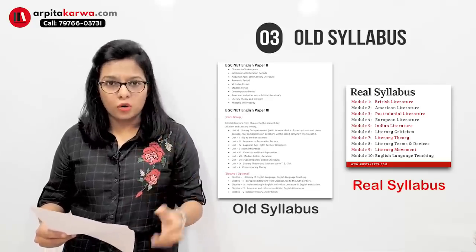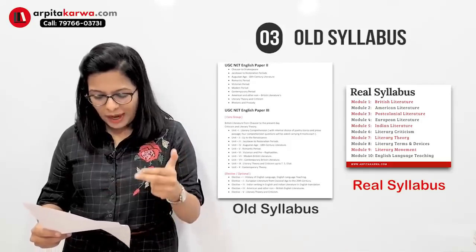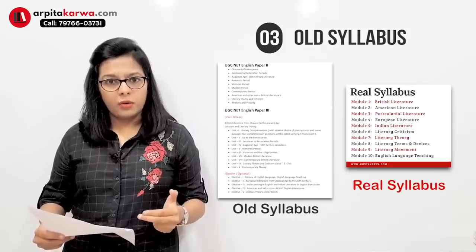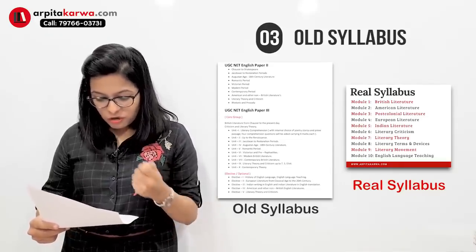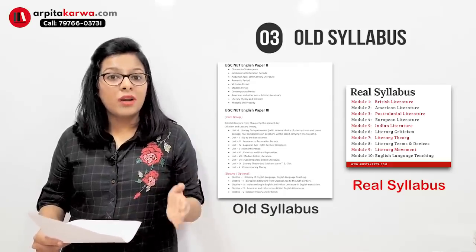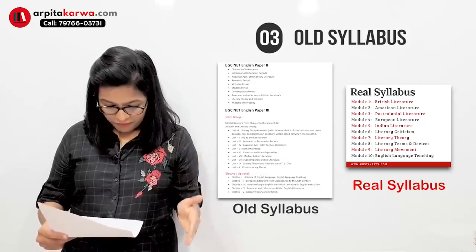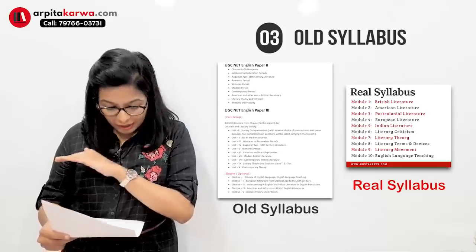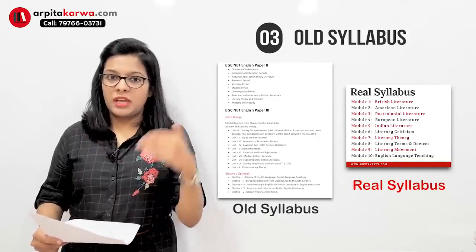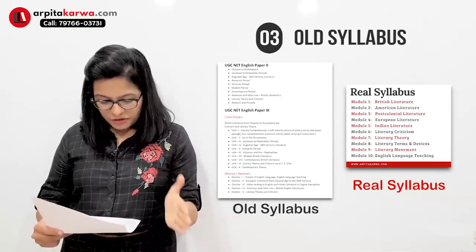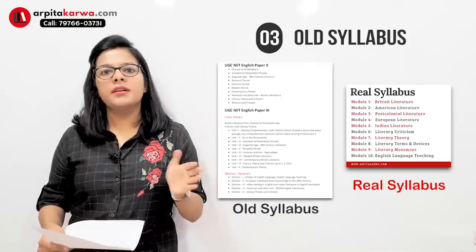Moving on to paper three, that is known as the core group — these questions were descriptive and compulsory. If you look at paper three again, they have written all the ages in British literature, from Chaucer till the contemporary period. Then in electives they have written history of English language and English language teaching — which I cover in module ten, linguistics. Then European literature from classical to 20th century — clearly module four. Then Indian writing in English and Indian literature in English translation — covered completely in module five. Then American and non-British literature — again modules two through five. And finally literary theory and criticism. So you can see they have just copied the items from paper two to paper three, and the rest of the syllabus still falls under the 10 modules.